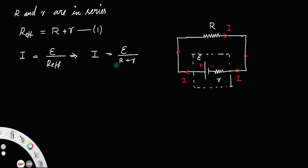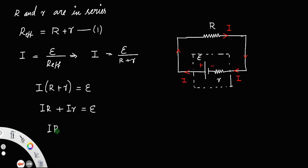Taking (R + r) to the left gives I(R + r) = E, which expands to IR + Ir = E. Rearranging, IR = E − Ir. Here, IR is the voltage across the external resistance, which we call terminal potential. So terminal potential V = E − Ir — let us call that equation 2.